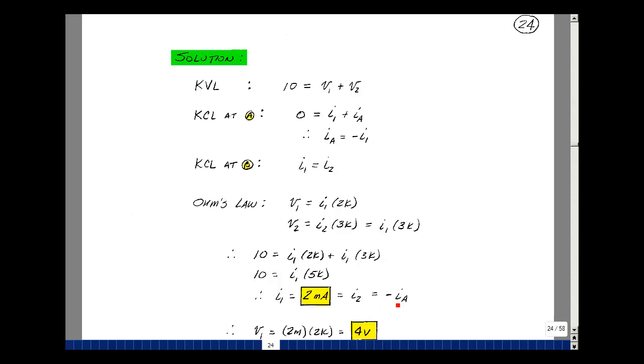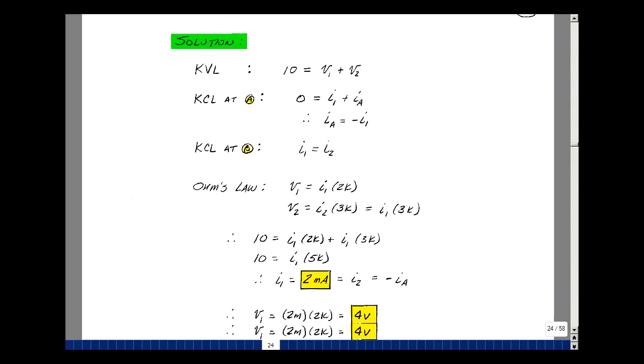Now to know the current, I can solve for the voltage across the resistances. So V1 then would be I1 times 2k. My 2 milliamps times 2k would give me 4 volts. And then the 2 milliamps times 3k would give me 6 volts. And you can find this just below.